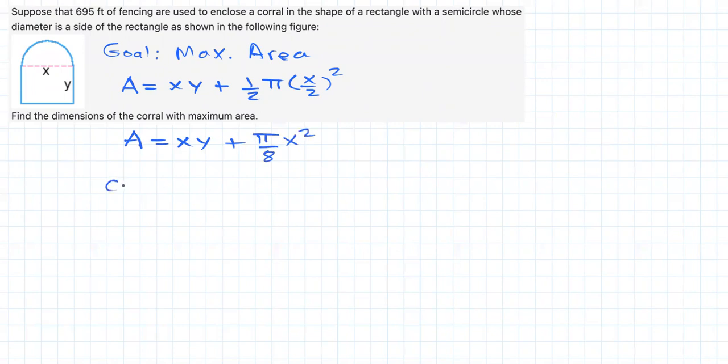Now, there is a constraint. No matter how you design this corral, you have to use 695 feet of fencing. Basically, that means that the perimeter, which we will represent with capital P, no matter what, must be equal to 695 feet, right? Great.